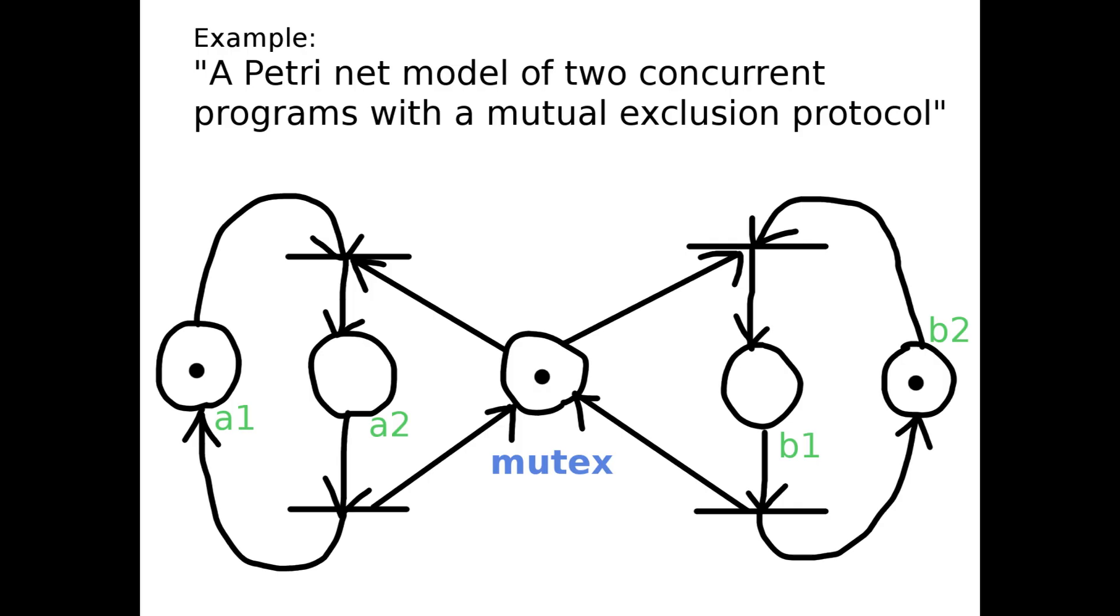Only one of the programs can be in its critical section at any time. Program A is in its critical section if there is a token on place A2, and Program B is in its critical section if there is a token on place B1. The job of the mutual exclusion protocol is to ensure that these two places cannot simultaneously have a token.